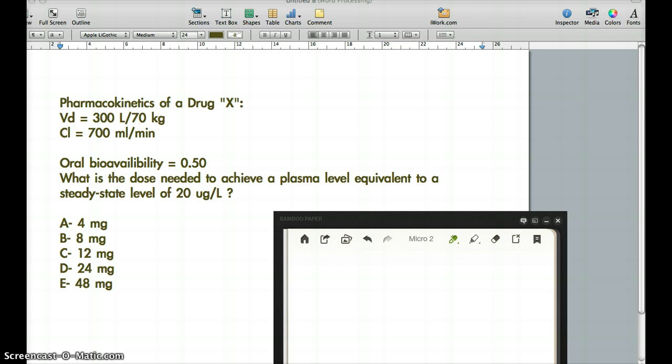The question says that pharmacokinetics of a drug X has VD about 300 liter per 70 kg, clearance about 700 milliliter per minute, and oral bioavailability about 0.5. What is the dose needed to achieve a plasma level equivalent to a steady state level of 20 microgram per liter?